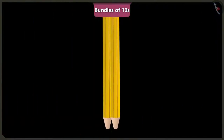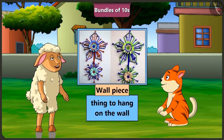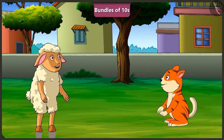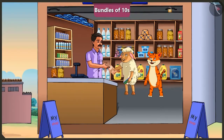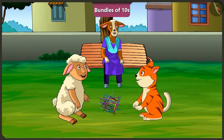Ma'am asks Lily what she is going to make in the school's handicraft festival. Lily says she is going to make a straw wall piece, an object to be hung on the wall. Billy says he has thought of the same thing, so they decide to go and get the straws. Corey notices there are a lot of straws and asks how they will divide them.